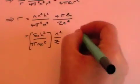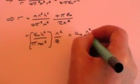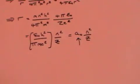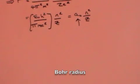But this term is just full of constants and can be reduced to a single constant, which we call a naught times n squared over z. And a naught is known as the Bohr radius.